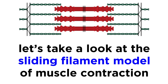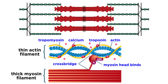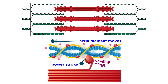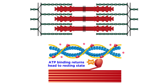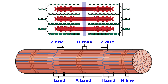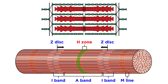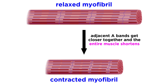Now that we've examined each structural component, let's describe how everything works, using the sliding filament model of contraction. This says that when the nervous system stimulates muscle fibers, the myosin heads on the thick filaments will interact with the binding sites on the actin subunits. These attachments will form and break several times as the thick filaments pull the thin filaments in towards the center of the sarcomere, thus pulling the Z-discs towards the M-line. The I-bands shorten and the H-zone disappears. The overall effect is that the A-bands from adjacent sarcomeres get closer together, so the entire muscle cell will shorten. This is the mechanism by which muscles contract.